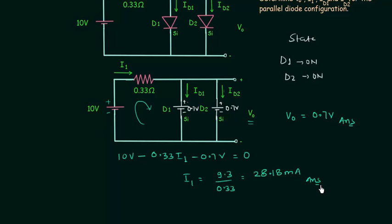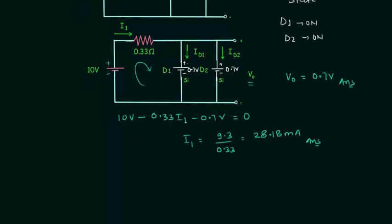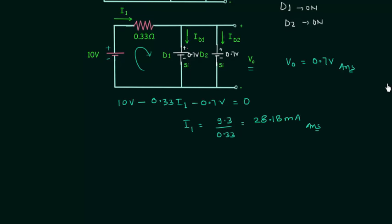Now we will move to calculate ID1 the current through the first diode. I will use Kirchhoff's current law to find out the current ID1 and current ID2. I will modify this circuit to apply Kirchhoff's current law. I will connect this node like this and this node like this. Now I will apply Kirchhoff's current law at this node.